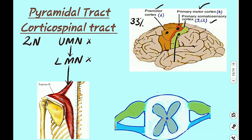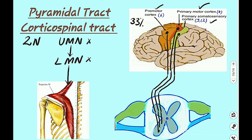From here, these neurons will descend and they will cross sides. If coming from the right side, they will go to the left side of the spinal cord, and if from the left, they go to the right. In the spinal cord, they end at the lower motor neuron. The lower motor neuron cell body is present in the ventral horn. From here, the lower motor neuron will exit the spinal cord through the ventral root, which is pure motor. These lower motor neurons will reach the skeletal muscle, utilizing plexuses like the brachial plexus, lumbar plexus, or lumbosacral plexus.